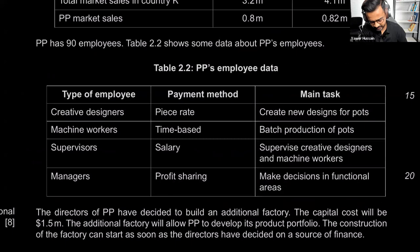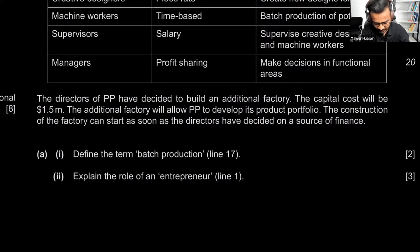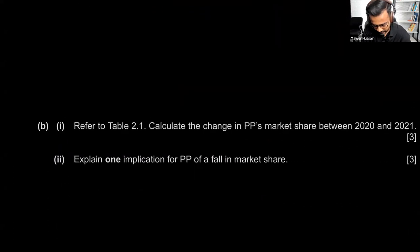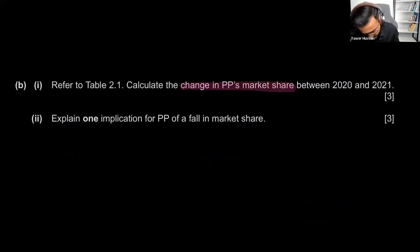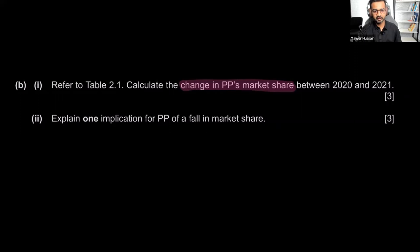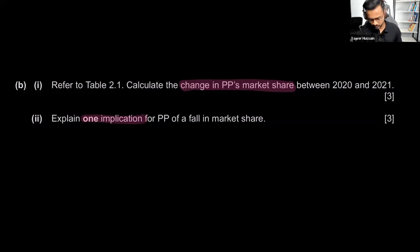Part A is definitions and explaining — batch production and the role of an entrepreneur. Part B is asking you to calculate the change in market share. It's very important to read the calculation question carefully to know exactly how they want the answer presented, plus one implication.